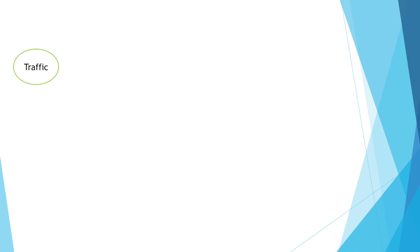Here is the breakdown. We have traffic, which is people on the internet searching for stuff. When the traffic finds your squeeze page, we collect contact details — mainly name and email address — and it takes two paths.